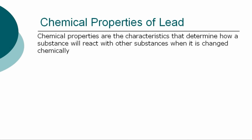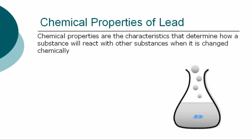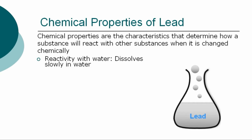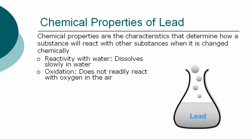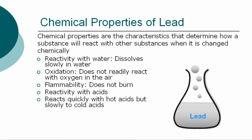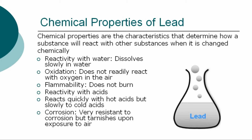The chemical properties are the characteristics that determine how lead will react with other substances when it is changed chemically. The chemical properties of lead are: Reactivity with water — lead dissolves slowly in water; Oxidation — does not readily react with oxygen in the air; Flammability — does not burn; Reactivity with acids — reacts quickly with hot acids, but slowly to cold acids; Corrosion — very resistant to corrosion, but tarnishes upon exposure to air; Toxicity — toxic.